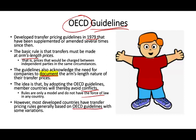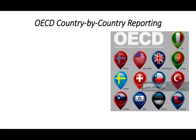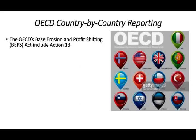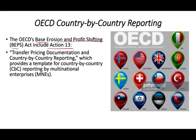We have something called OECD country-by-country reporting, which we'll look at briefly in this session. It stems from the OECD Base Erosion and Profit Shifting — the BEPS Act — which includes something called Action 13, covering transfer pricing documentation and country-by-country reporting. This provides a template for multinational enterprises, and it's a form that OECD countries use.